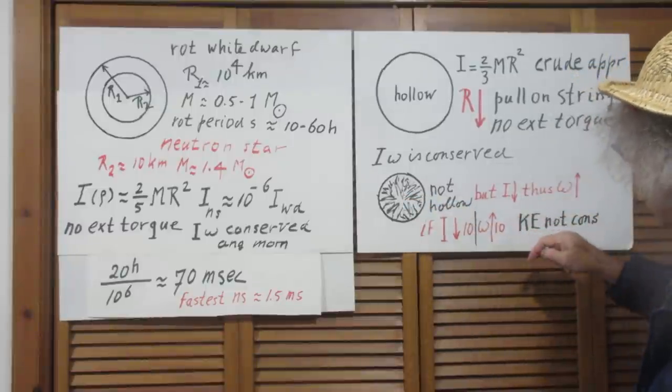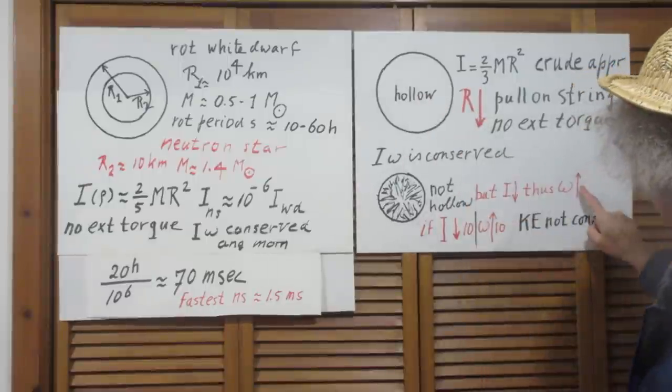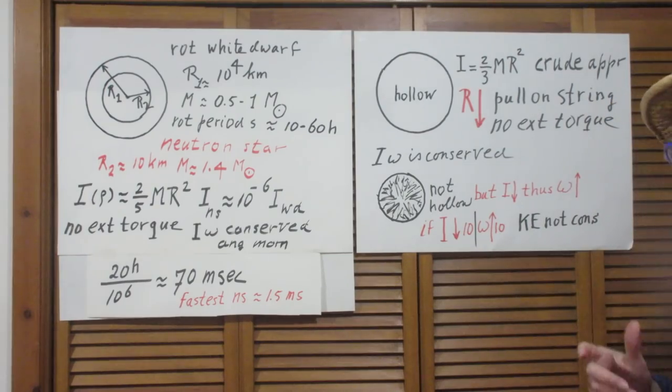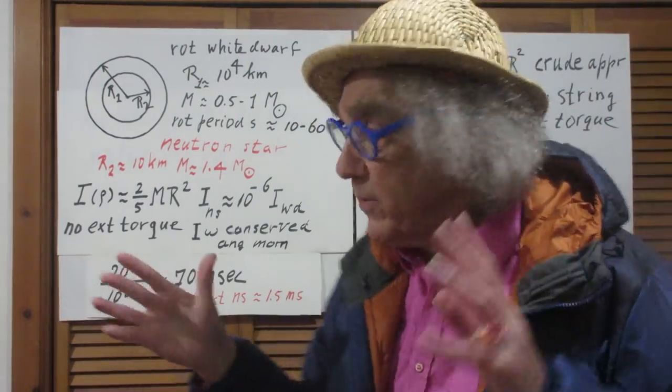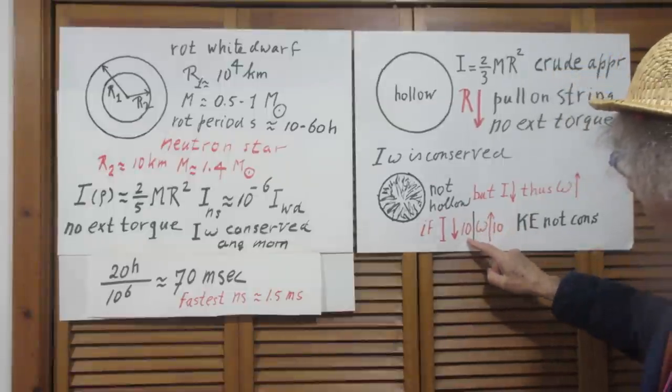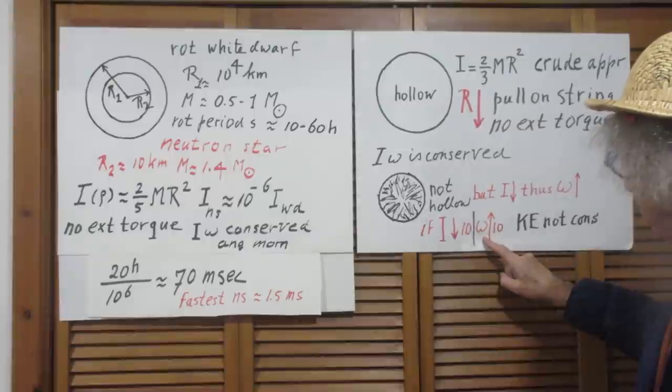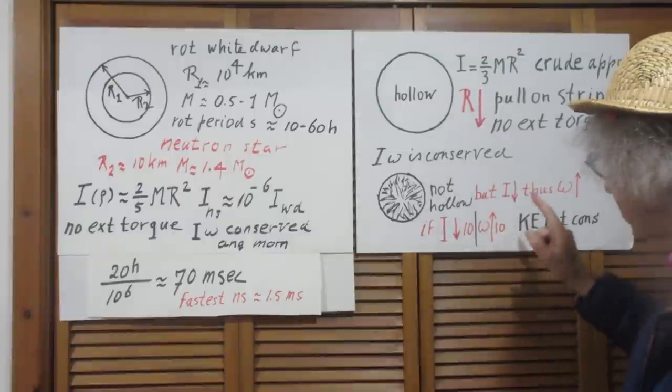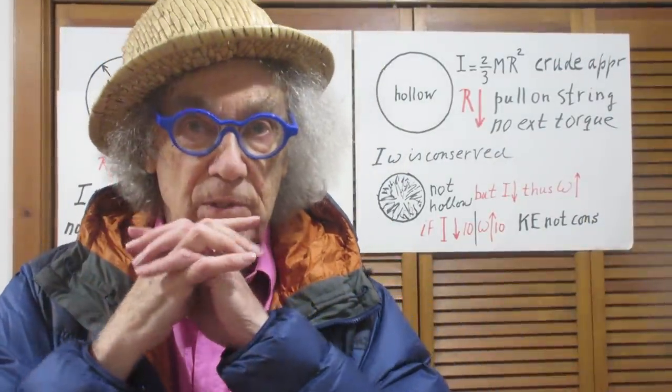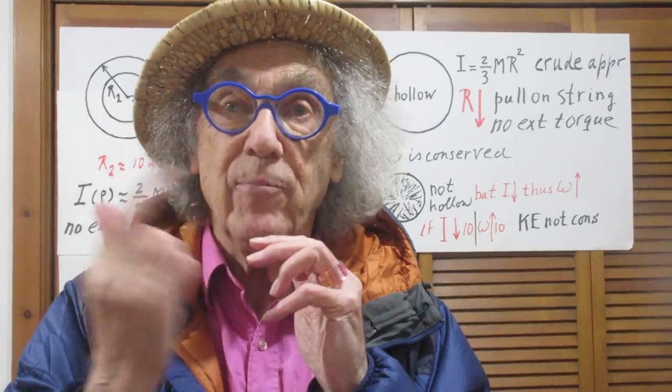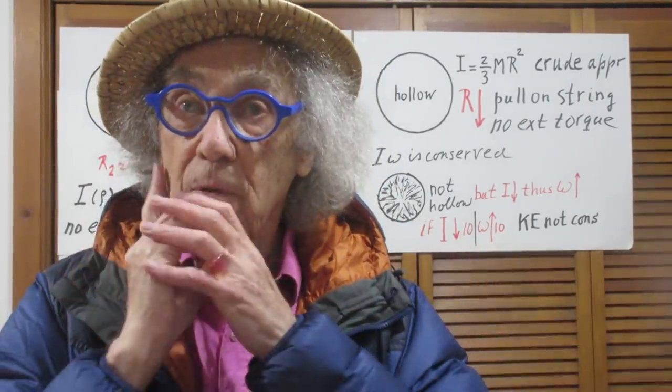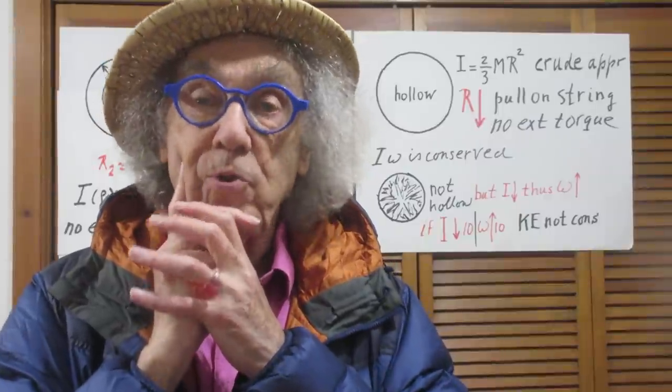But what is for sure, and that's what matters, is that the moment of inertia of this one is definitely smaller than this one. And that means omega must go up. If I make a very rough guess that the moment of inertia went down by a factor of 10, it would mean that omega would go up by a factor of 10. So in the collapsed shape, it would rotate 10 times faster around than in the non-collapsed phase. And that's about what you see.